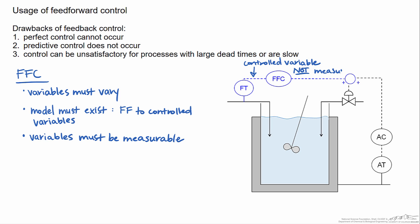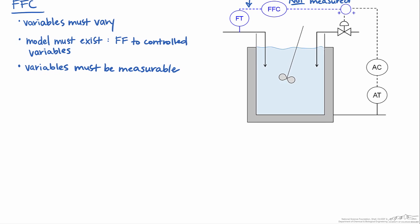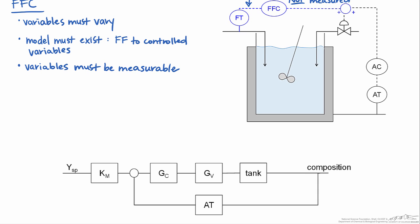By putting these together, the question is from a block diagram standpoint what does this look like? As a start, we will start with the part in black which is the feedback scheme. The feedback scheme is no different than what we saw before where we had the transmitter, we would have a set point with an appropriate gain, it would then go to the controller, the valve, the process which here is the tank, and then out would come the composition.